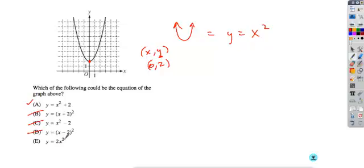And finally, zero squared times two is zero, so that one doesn't work. And so even just by plugging in that number, you get the only possible solution of A.